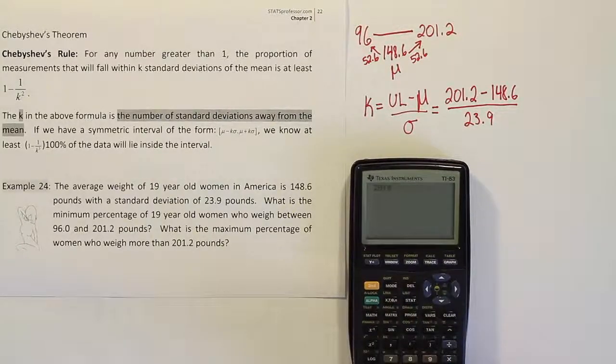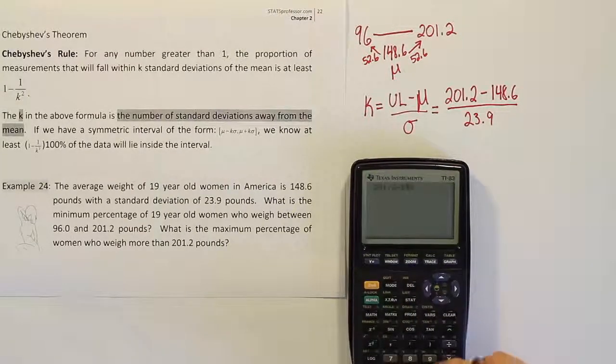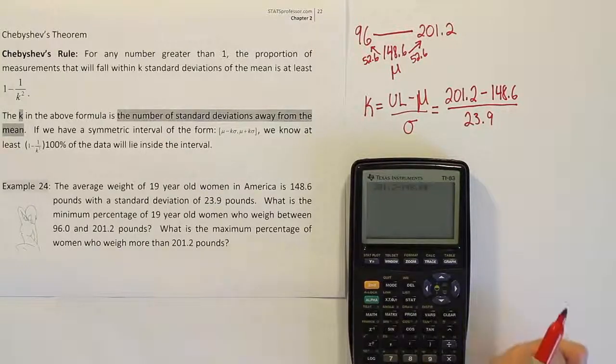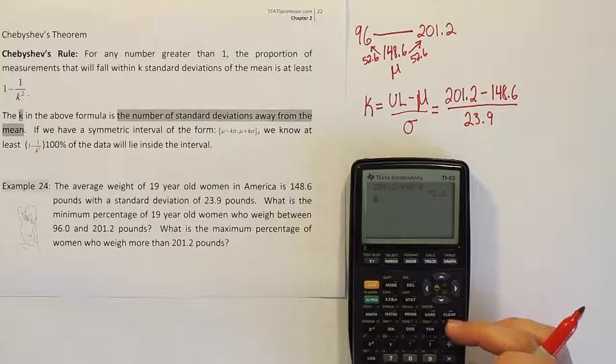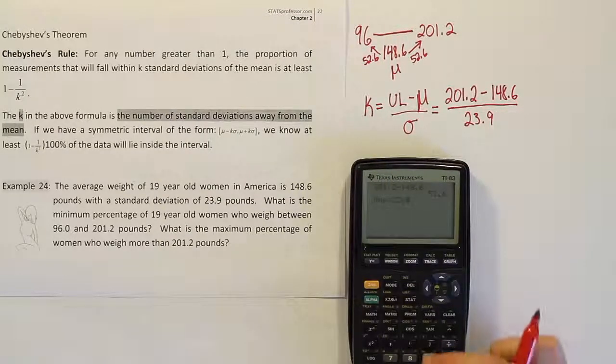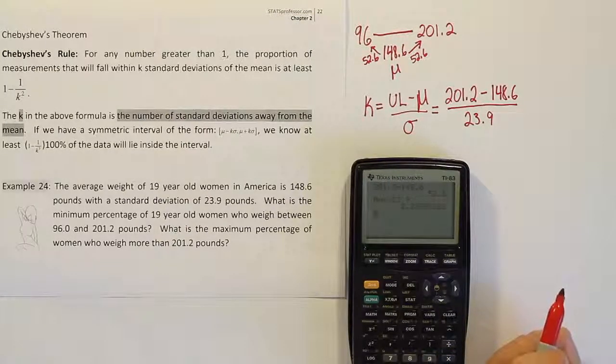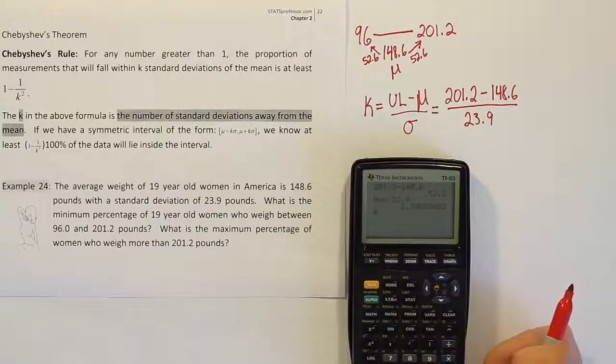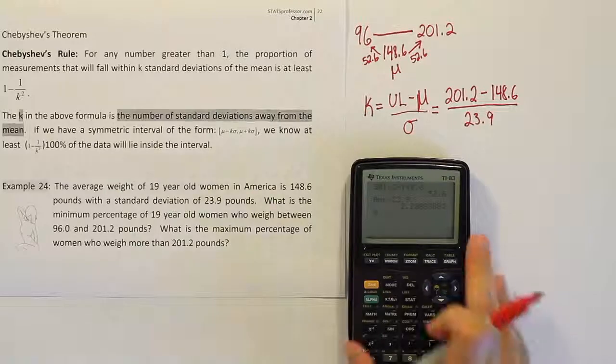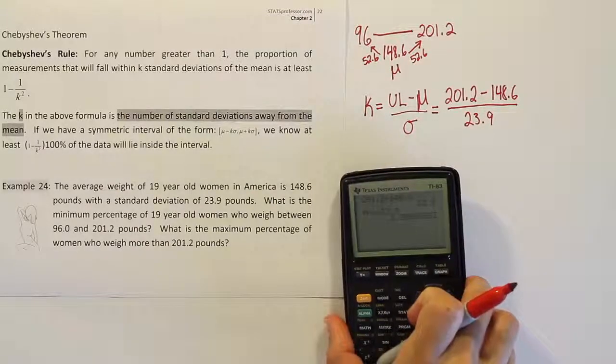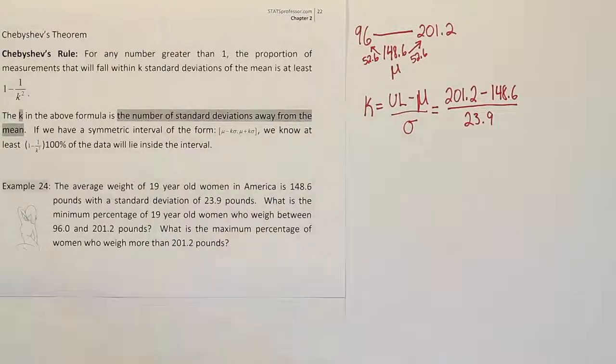So let's see what we get when we do that. So 201.2 minus 148.6. I do that and of course I get the 52.6 that we found earlier. And I'm going to divide it by 23.9. And we'll get the answer 2.2008 etc.